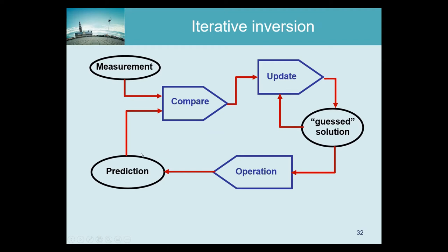We have a measurement, and we start by proposing a solution — just an initial value or image. Based on that solution, we apply the operation that we want to invert. We have to deal with an inverse problem, and such problems come up all the time. Some things are very difficult in one direction and easy in the other. So we describe the forward operator that we know how to apply.